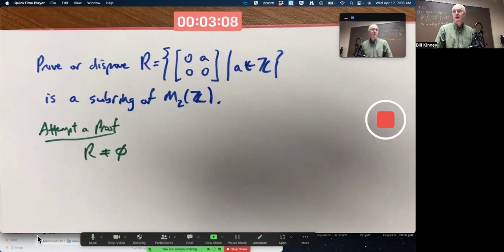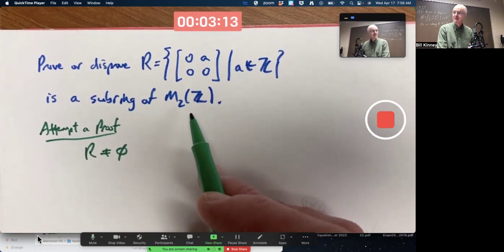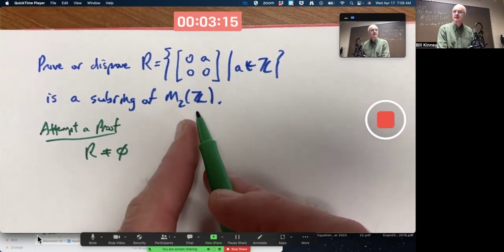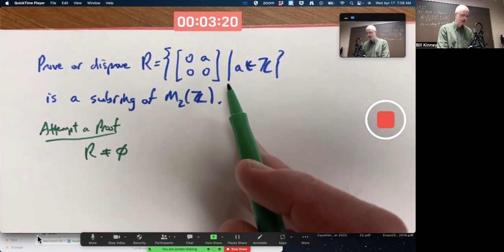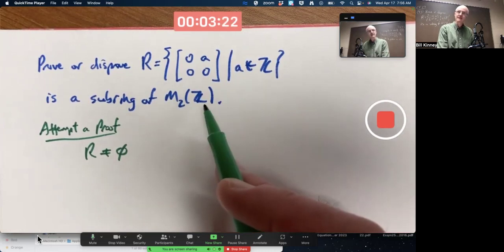The subring test says once you know the set is a non-empty subset of, well, this, it is a subset of this. That's the set of all matrices, 2x2 matrices with integer entries. This is a special kind of 2x2 matrix with integer entries.